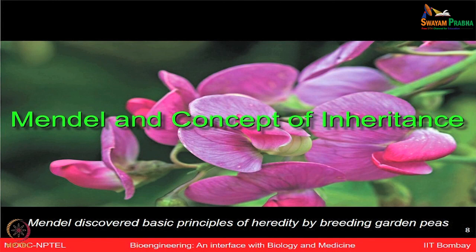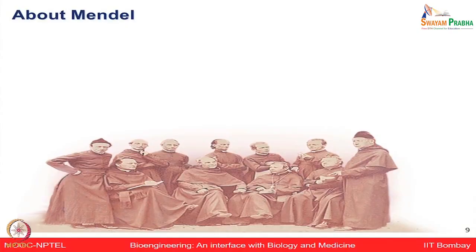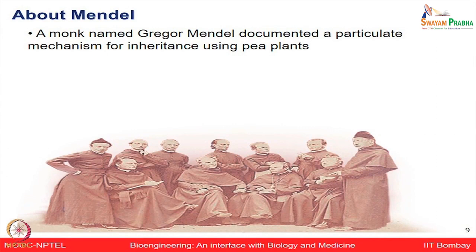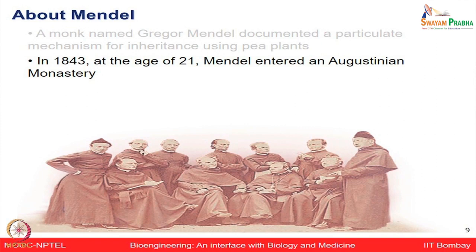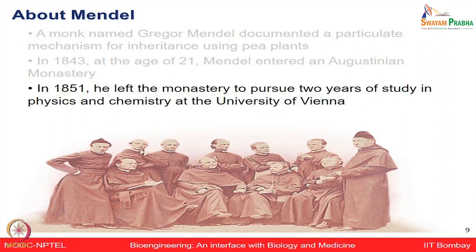Mendel did experiments not for a job or profession — he was doing these things out of his interest. He was actually a monk growing pea plants in his own backyard. At the age of 21 he joined the Augustinian monastery, but he felt he should do more advanced study. He was much more interested in physics, chemistry, and math, not biology. Sometimes you may not like a subject but still make an original contribution to the field for which you will be remembered.